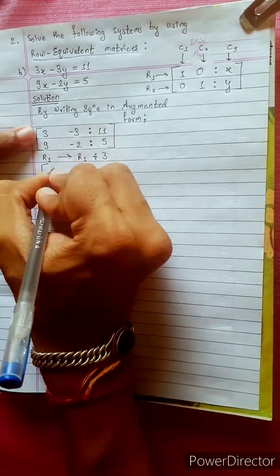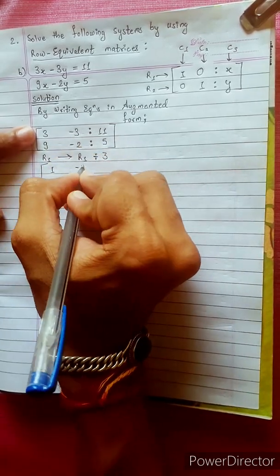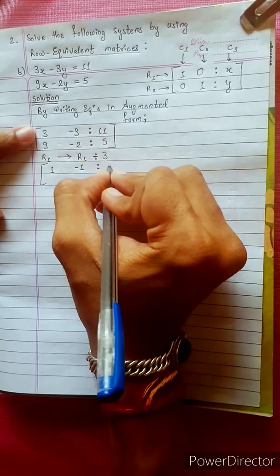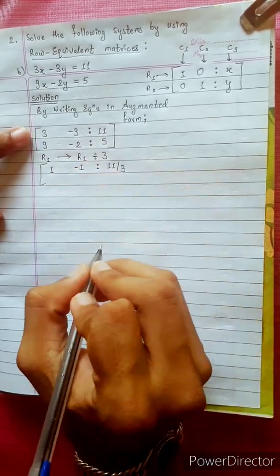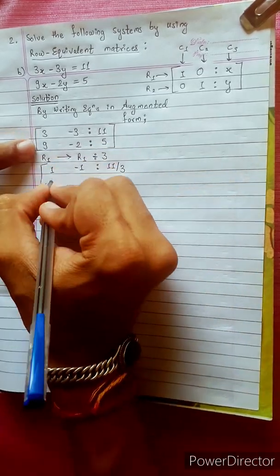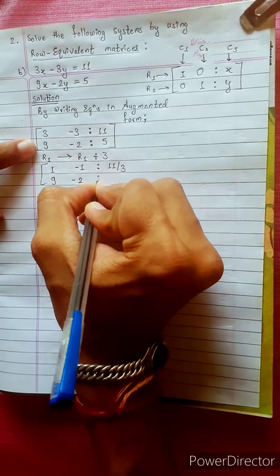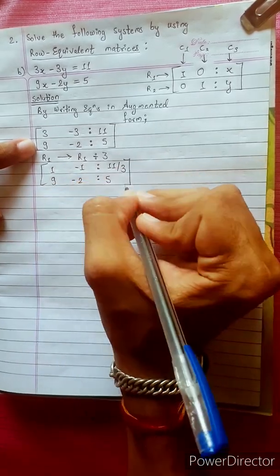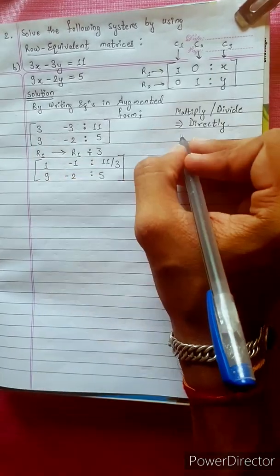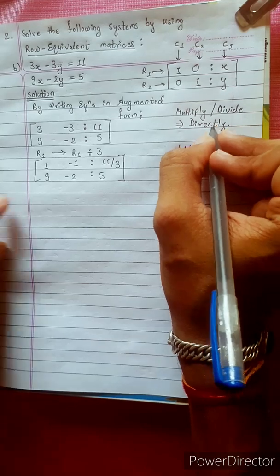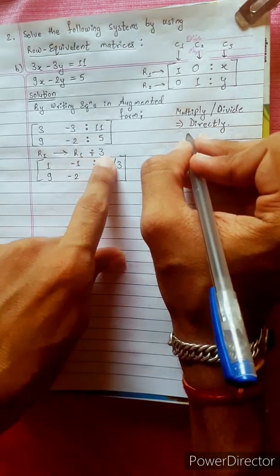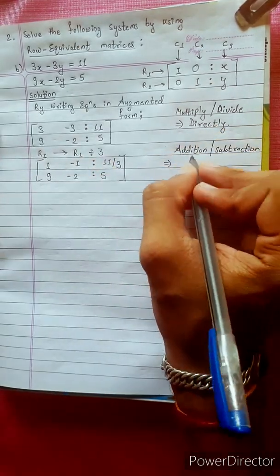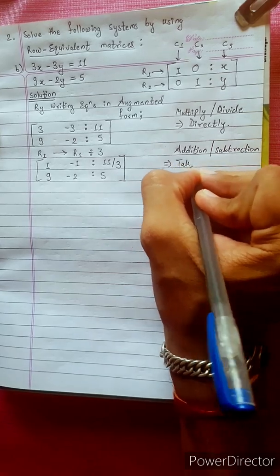Dividing R1 by 3: 3 divided by 3 is 1, minus 3 divided by 3 is minus 1, giving us 11 by 3. We also have 9 minus 2 giving values 6, 4. Then 9 minus 2 is 1, giving 2, 5.